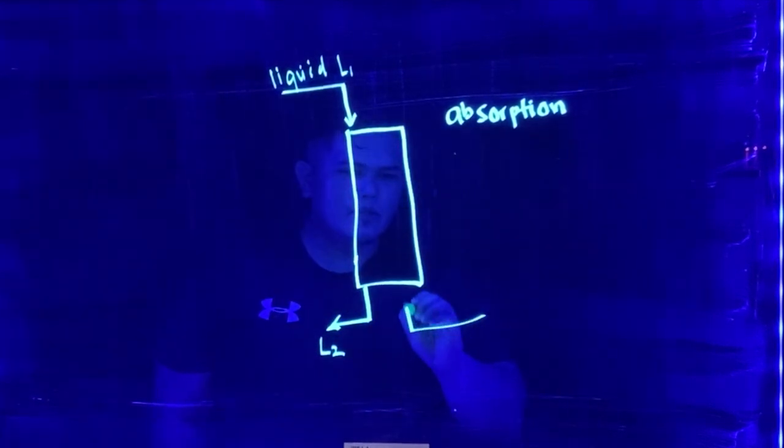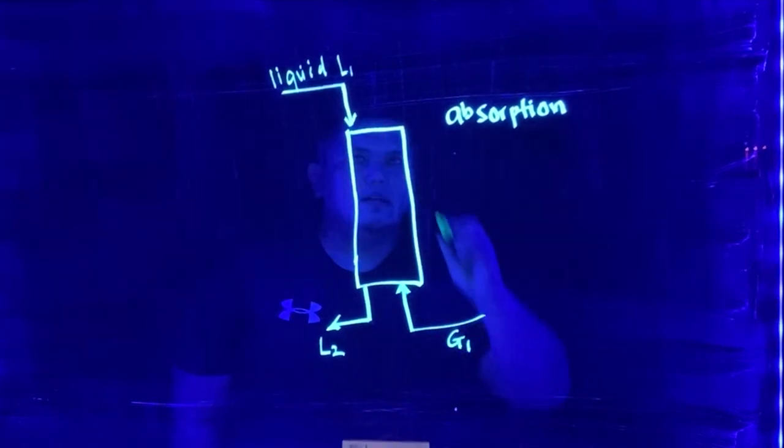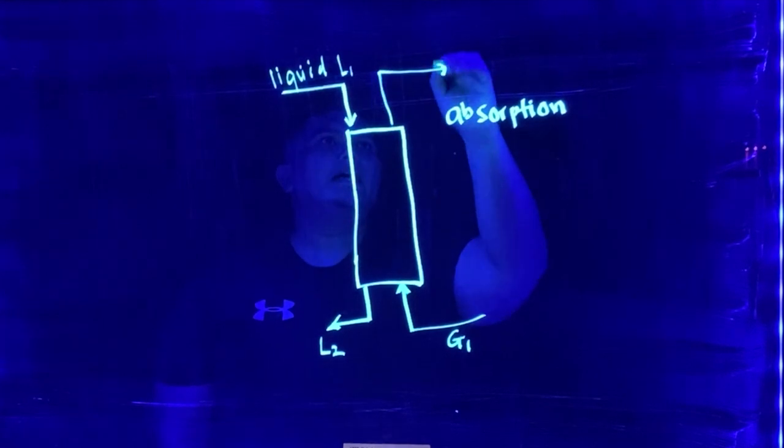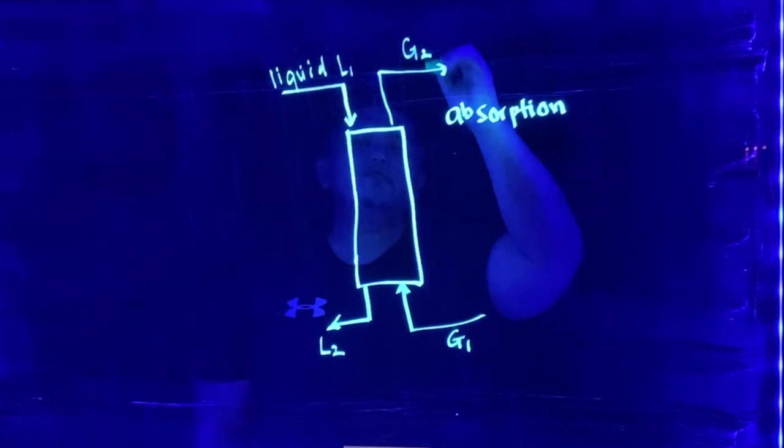And then there is a gas that needs to be scrubbed, and then this is G1 and then the gas which has been scrubbed is G2.